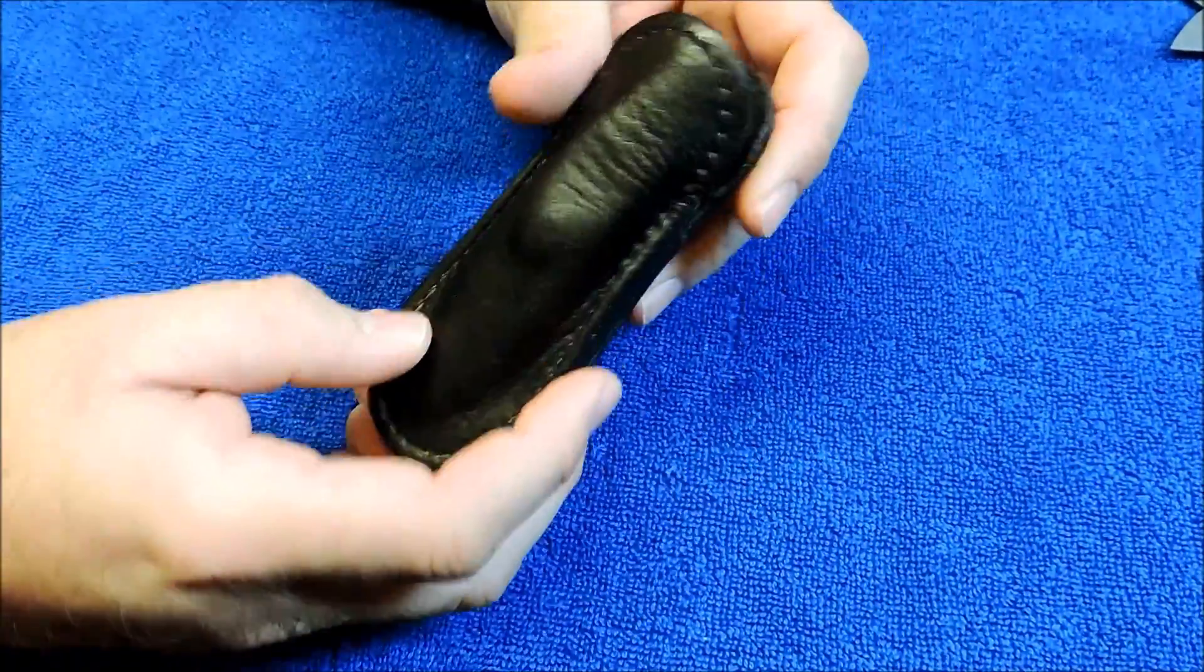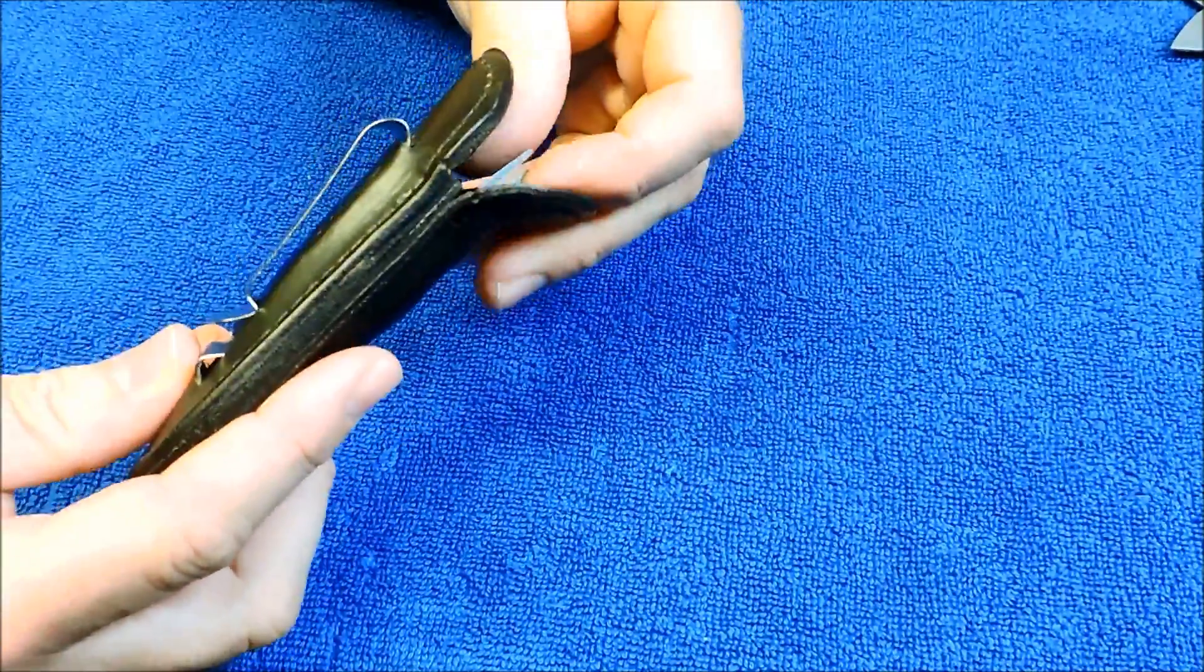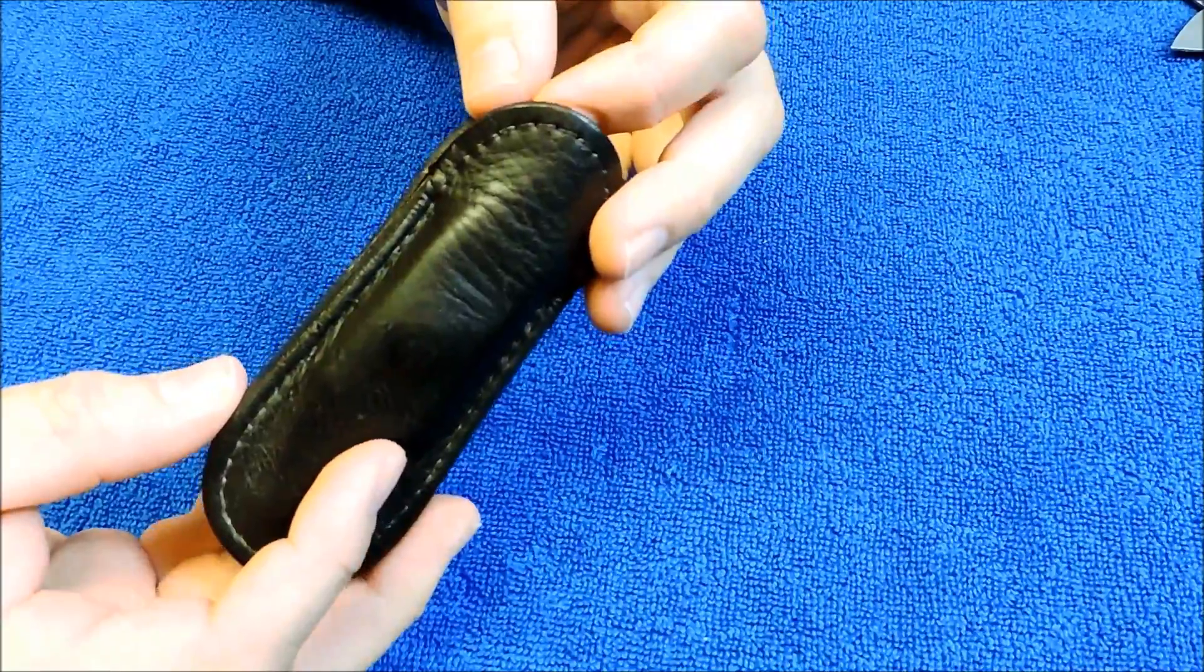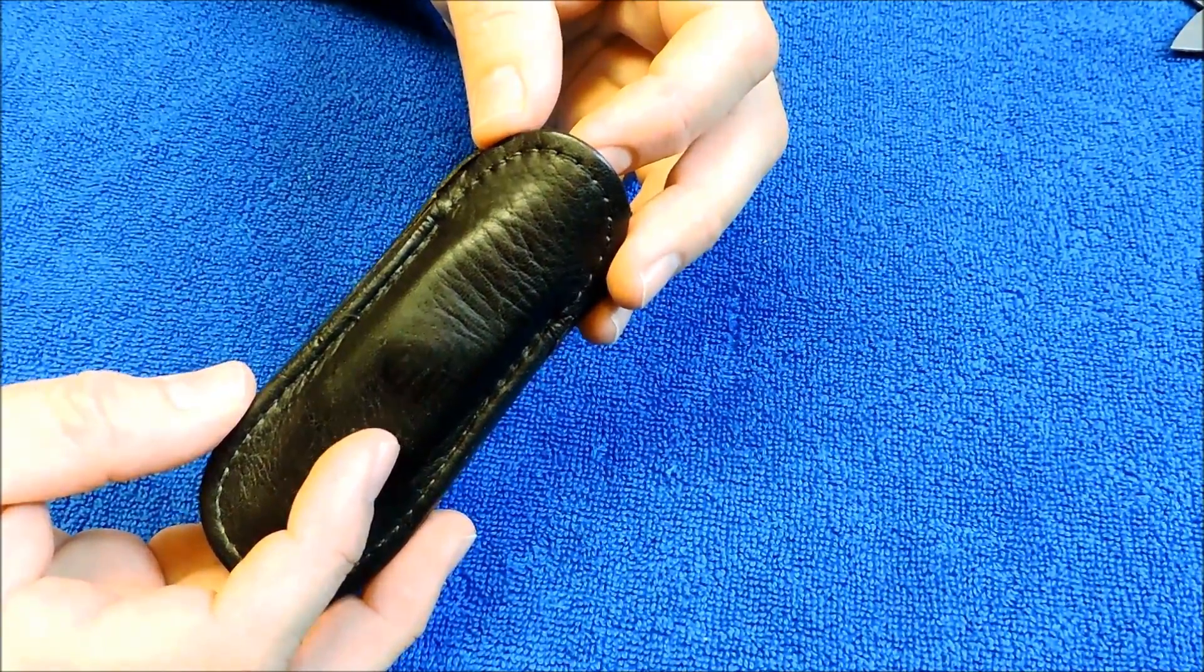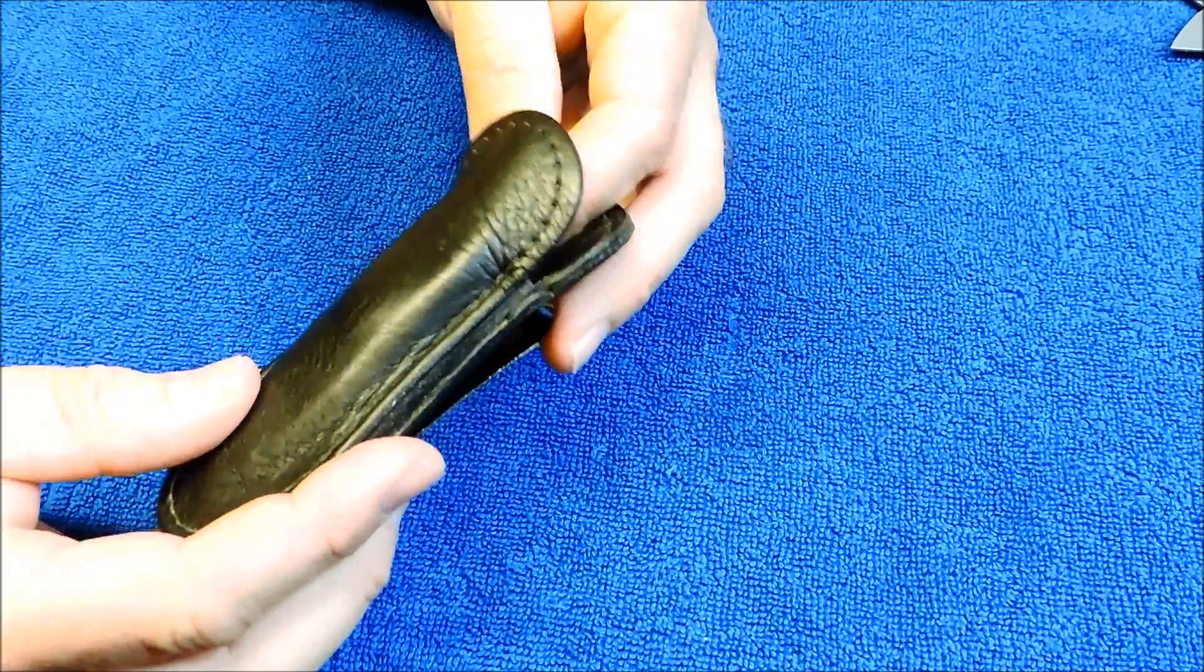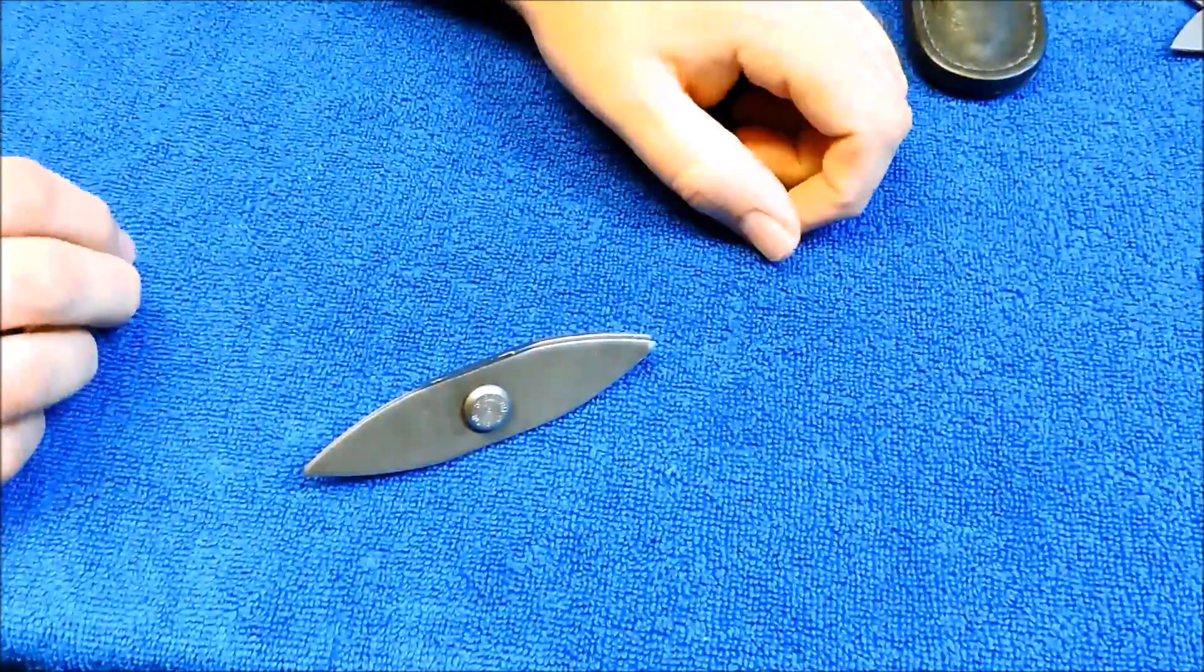This one is the Blossom Blade. You can see it comes in this nice leather sheath you can put on your belt for quick deployment. It still smells like leather to this day. There it is.